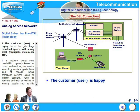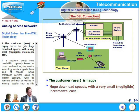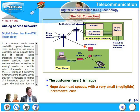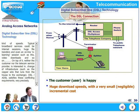2 Mbps is very common, which is 35 times faster than the current high-speed analog modem. The fourth advantage is that the customer is happy because he gets huge download speeds with a very small incremental cost. If a customer wants more bandwidth — popularly known as broadband services — she or he needs a technology which supports these kinds of speeds. Typical broadband services could be internet sessions, huge file transfers, and even an online e-learning session such as this, huge video downloads and so on. On top of it, neither the customer nor the telecom service provider is interested in change of infrastructure. DSL-ADSL satisfies these conflicting requirements very precisely.